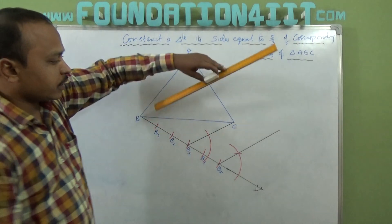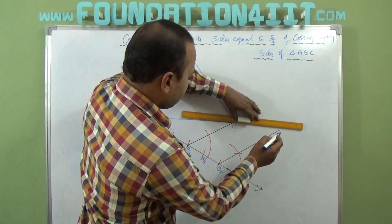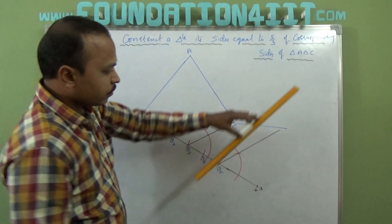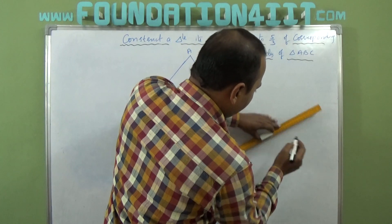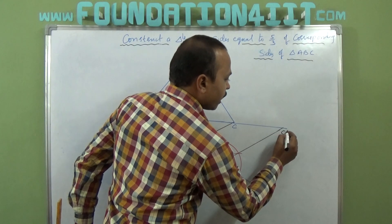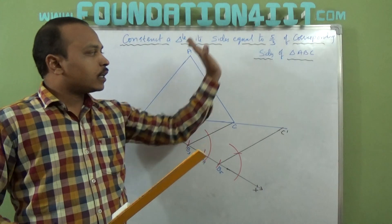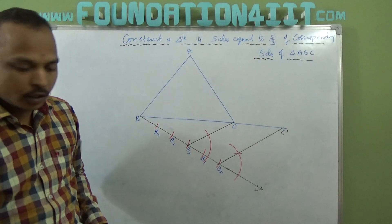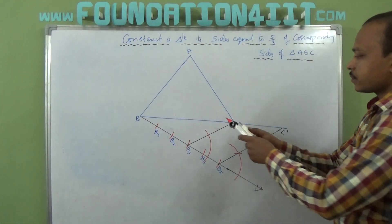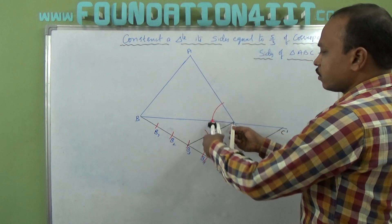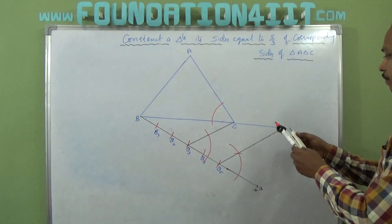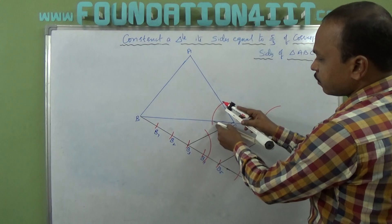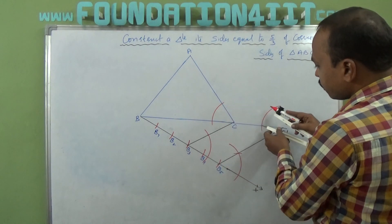This new line from B5 is exactly parallel to B3C. Since the new triangle will come out bigger, extend the sides of the previous triangle ABC outward. Extend the side BC beyond C, and extend the line from B5. Where the extended line from B5 meets the extended side of the triangle, that intersection point is C dash. Now AC is parallel to one more side, so from C dash you should draw a parallel line. Draw an arc from C, and without changing the compass, draw an arc from C dash. Check the gap between the arcs.